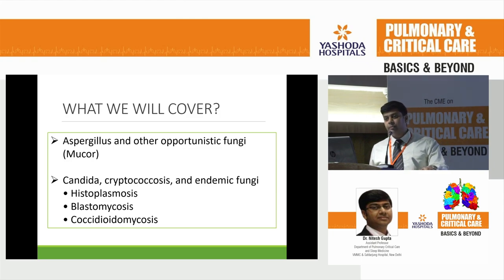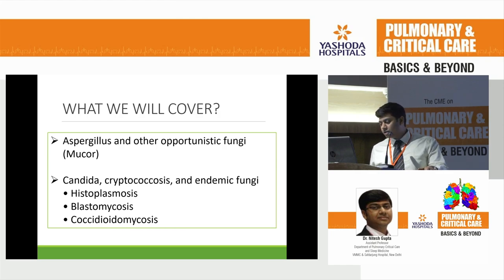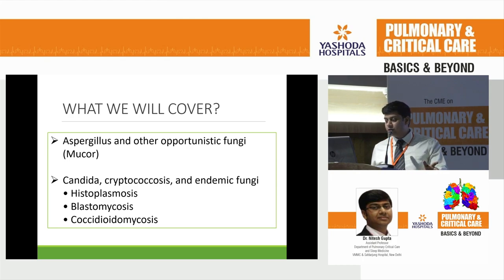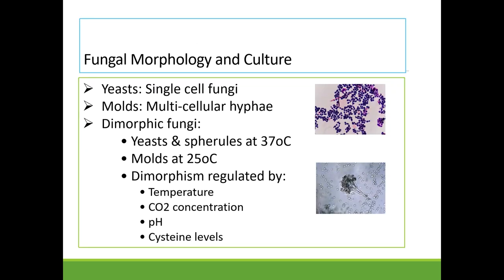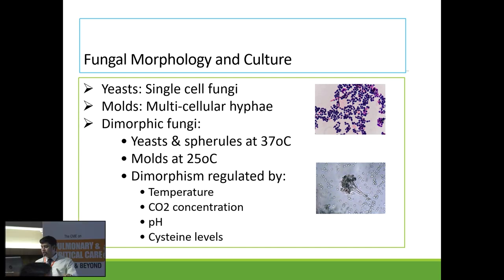Histoplasma has come up in a big way in the last two to three years. Earlier it used to be considered endemic only to the US, but now we see at least one or two cases a month being reported from various parts of the country. Fungal morphology includes single-cell fungi (yeasts), molds which are multicellular hyphae, and dimorphic fungi which have both forms.